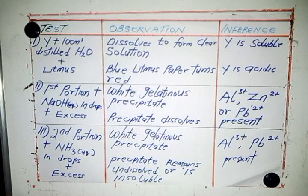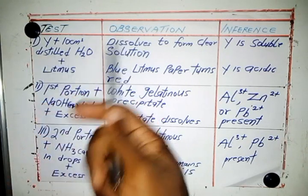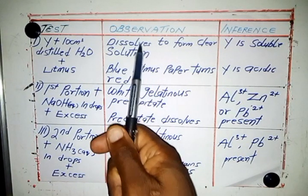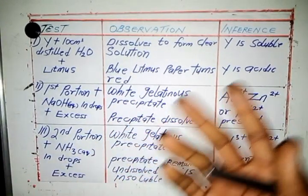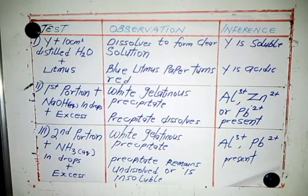Looking at the first test, most tests will start by adding a certain amount of distilled water. So Y plus 10 cm³ of distilled water — aluminium chloride is soluble, so it dissolves to form a clear, colorless solution. Y is soluble. Then adding litmus, you expect the litmus to turn red, meaning it is acidic. So Y is acidic.